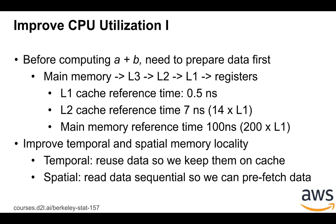One trick to improve CPU performance is to move data as little as possible — we call this memory locality. There are two kinds of memory locality. One is called temporal, which means we reuse data later so we don't need to evict it from cache. The other is called spatial, which means if we use data at a particular memory location, the next data we use will likely be nearby, so the CPU can prefetch data for us.